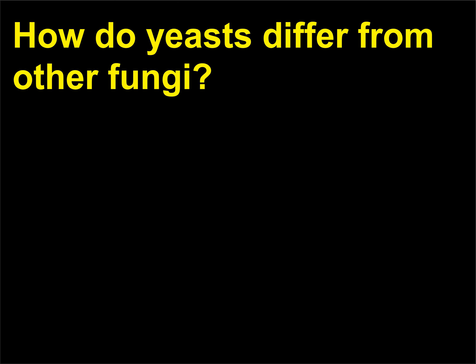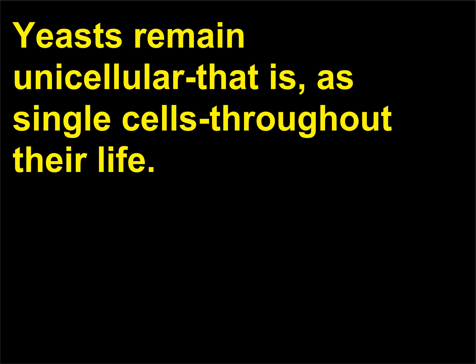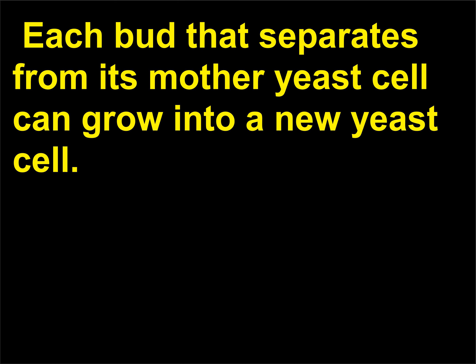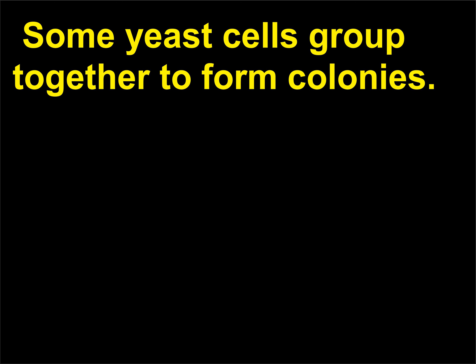How do yeasts differ from other fungi? Yeasts remain unicellular — that is, as single cells throughout their life. Most species reproduce by budding; others through binary fission or spore formation. Each bud that separates from its mother yeast cell can grow into a new yeast cell. Some yeast cells group together to form colonies.